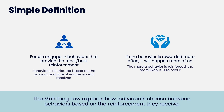People engage in behaviors that provide the most and best reinforcement possible. We have so much energy in our bodies — energy to exert within the environment to engage in behaviors which will get us what we want and need. So we're going to choose the most effective way to get what we want and need. Our body's going to try to conserve energy. If tapping the wall gets me attention, I'm going to do that rather than engaging in a tantrum.